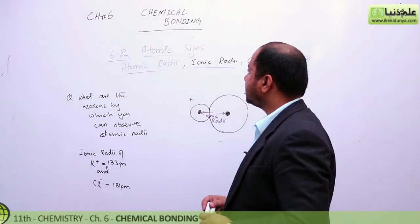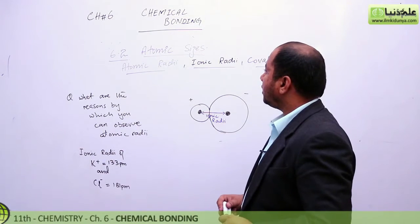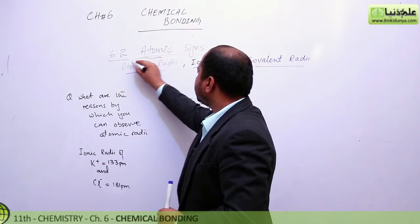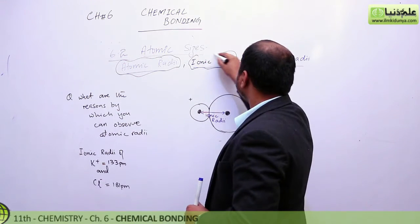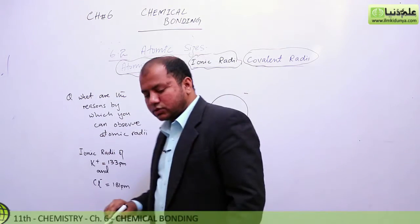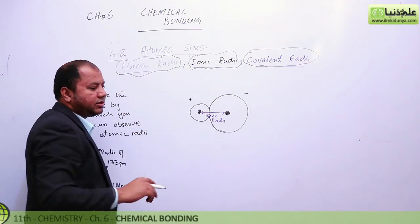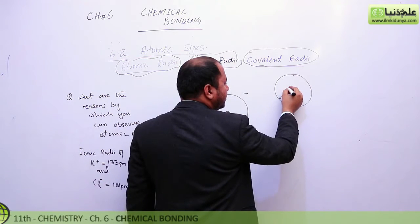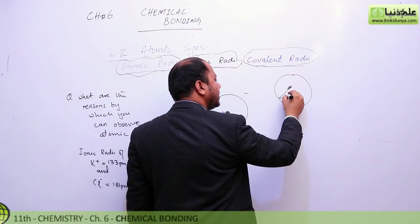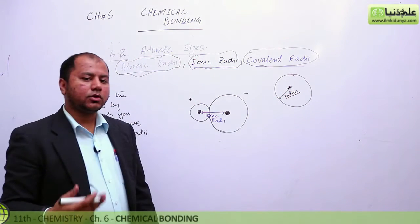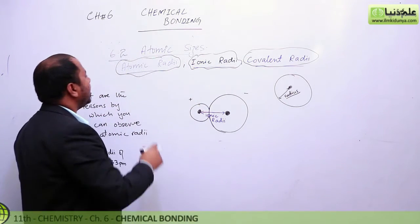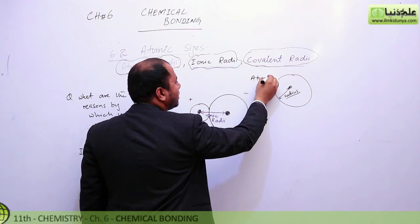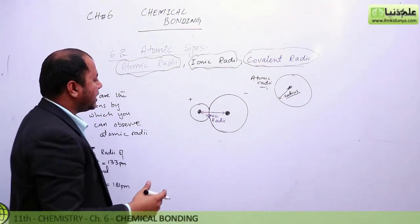Hey guys, I'm here with another topic of chemical bonding. Today we're going to talk about atomic sizes — specifically atomic radii. We'll also talk about ionic radii and covalent radii. Atomic size means the atom's size: the distance between the outer shell and the nucleus is called the radius, and this is called the atomic size or atomic radii.